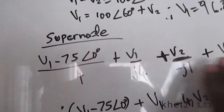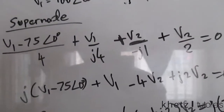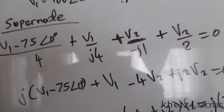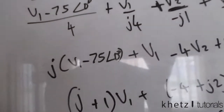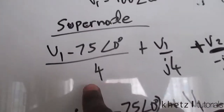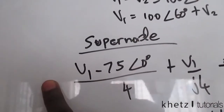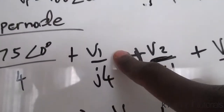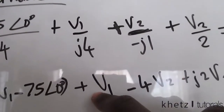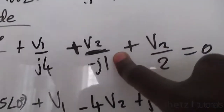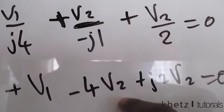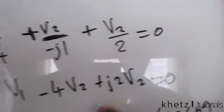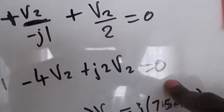Now we're going to multiply everything by J4, which is common among all terms. Multiplying everything by J4: J4 divided by 4 is just J, J4 divided by J4 is 1, J4 divided by negative J1 is negative 4, and J4 divided by 2 is J2. So this is our equation after multiplying through by J4.